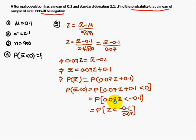Now divide by 0.07, you are going to get z less than minus 0.1 by 0.07, which is the probability of z less than minus 1.43.